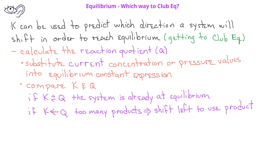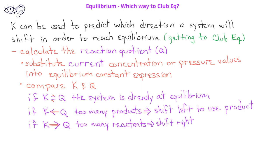On the other hand, if the equilibrium constant is greater than the value of the reaction quotient, this indicates that there are too many reactants and not enough products. In this situation, the system will shift to the right to form more products and to use up some of the reactants in order to reach equilibrium.